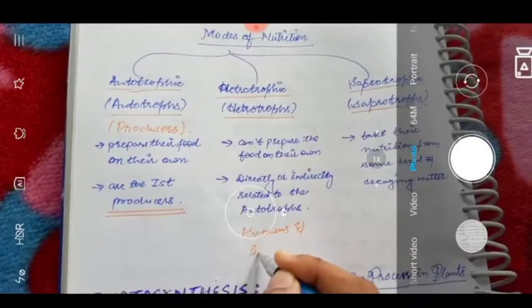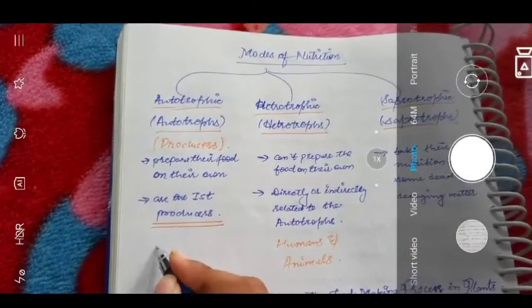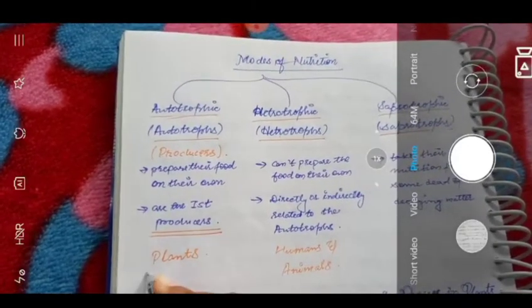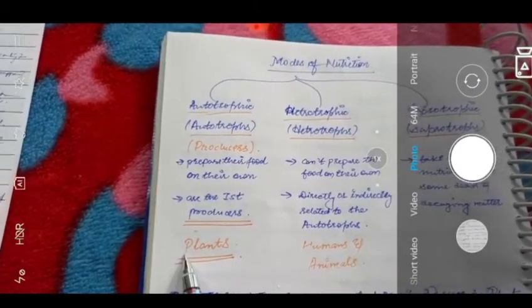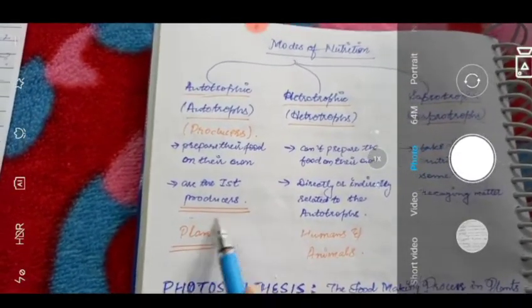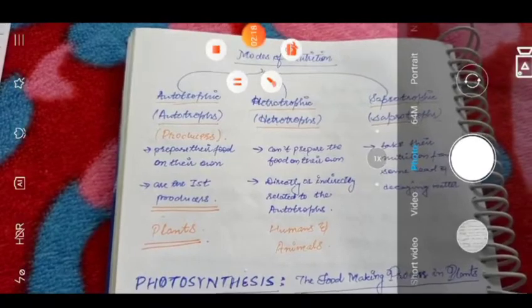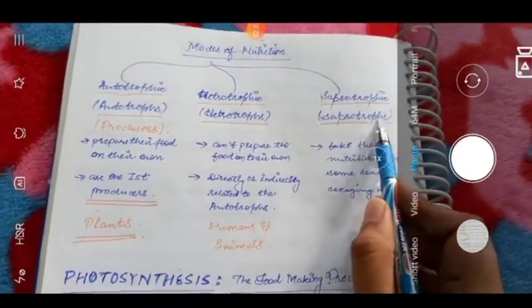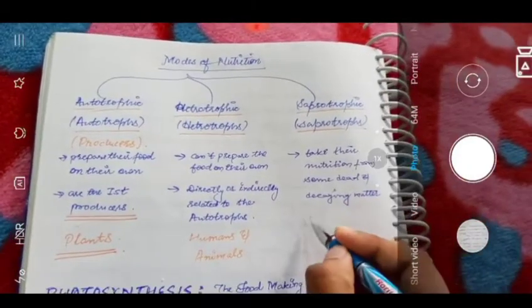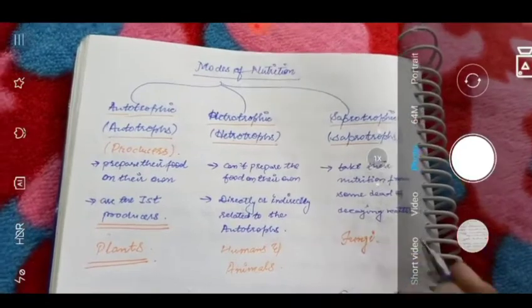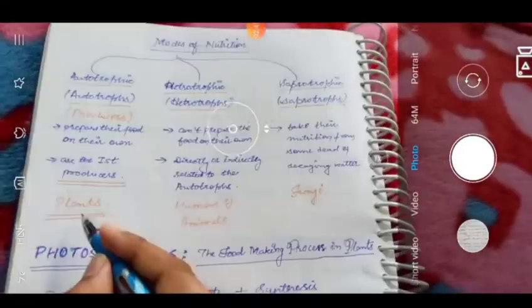Humans and all animals come under the category of heterotrophs. The best example of autotrophs is plants — all green plants that can prepare their food on their own. We human beings and animals directly or indirectly rely on plants for our nutrition. The third category is saprotrophs, where organisms take their nutrition from dead and decaying matter — the best example being fungi.